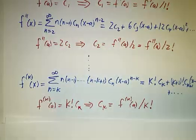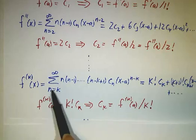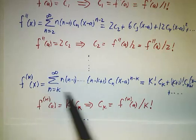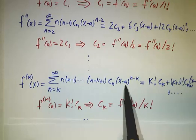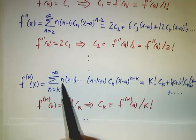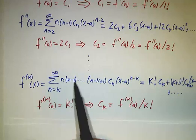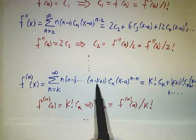Keep going. And after you take derivative k times, you discover that the kth derivative, well, you pull down a whole bunch of powers. You start off with x minus a to the nth, so you take a derivative once, you get an n. Derivative again, you get a power of n minus 1, n minus 2, n minus 3, n minus k plus 1.